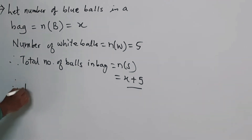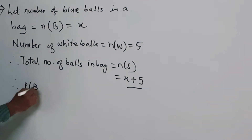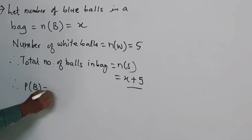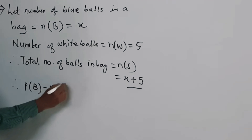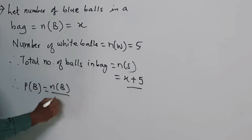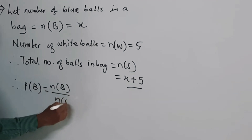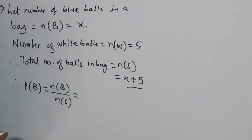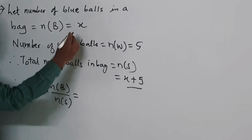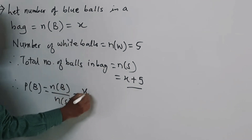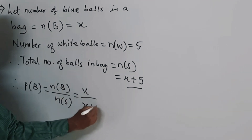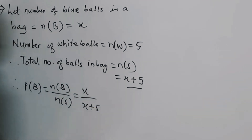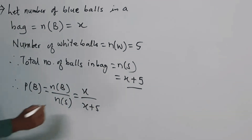Therefore, probability of blue ball is equal to Nb upon Ns, which is equal to x upon x plus 5.